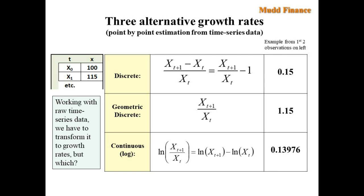That raises the question about which growth rate we want to use or which estimator we want to use. Now suppose in this example we're comparing an initial value of 100 to a later value of 115. On the top, we have the standard discrete formula for the growth rate, which will give us a percentage of 15%.